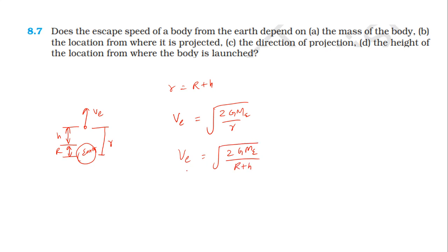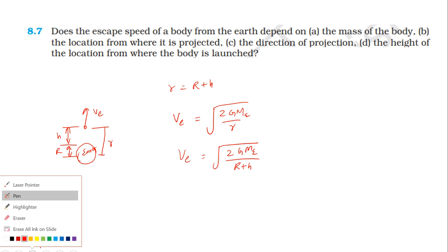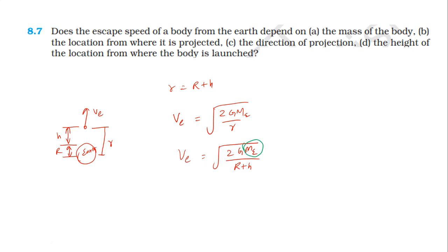The escape velocity depends on the mass of the earth and the height from where the body is projected. It is independent of the mass of the body.